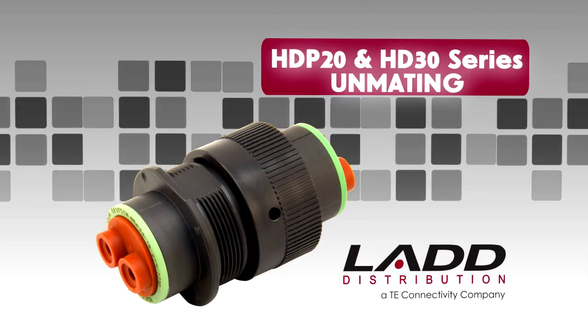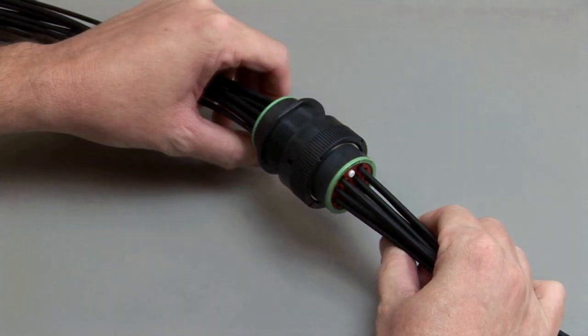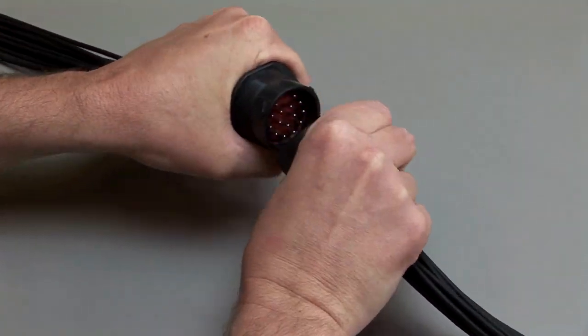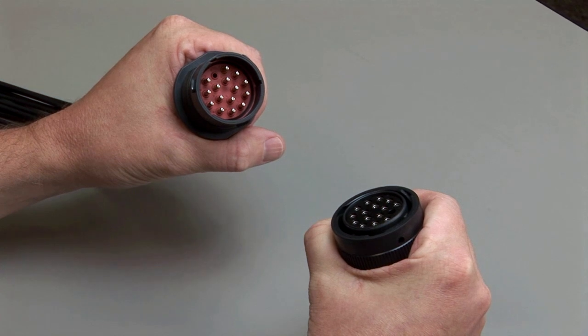HDP20 and HD30 unmating. To unmate the HDP20 and HD30 series connectors, grasp the coupling ring on the plug and twist one quarter turn until it unmates from the receptacle.